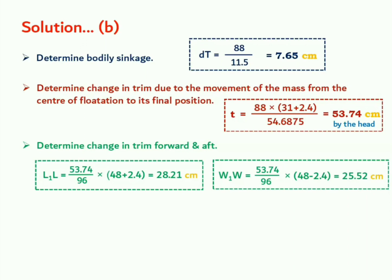Final drafts will be the original draft plus the bodily sinkage. And see L1L is going to be the increase in draft, that's why we are adding it. And then W1W is being the decrease in draft in the aft, and that's why 0.2552 has been subtracted.